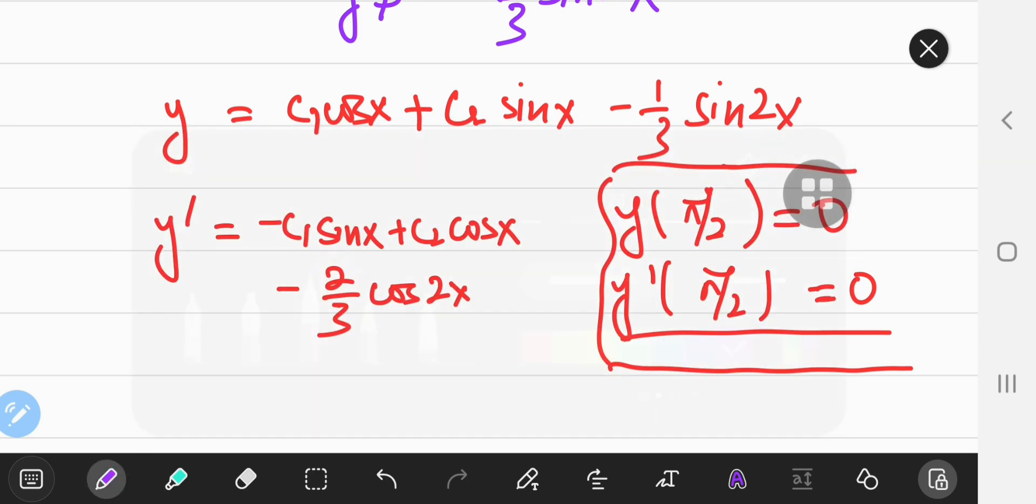Negative c1 sin x plus c2 cos x and then a minus 2 thirds cos 2x. Now to plug in the values where x equals pi by 2 and y equals 0. This should cross out to 0 and this should be c2 and here I should have sine of pi, which is 0 again. So c2 equals 0.